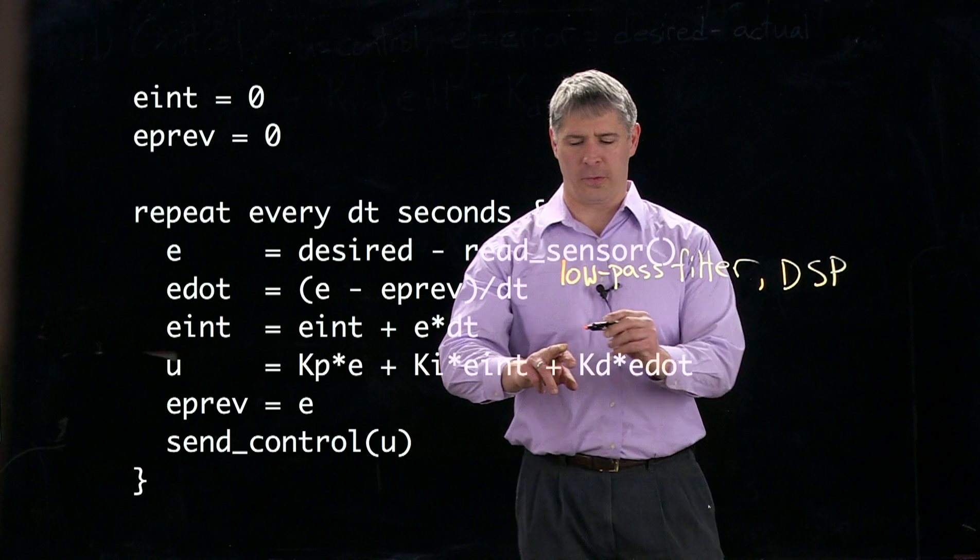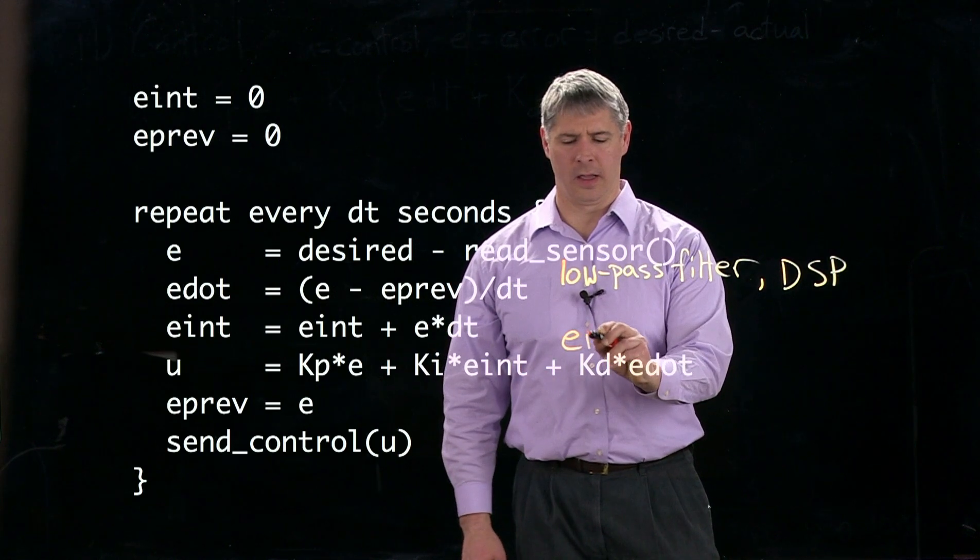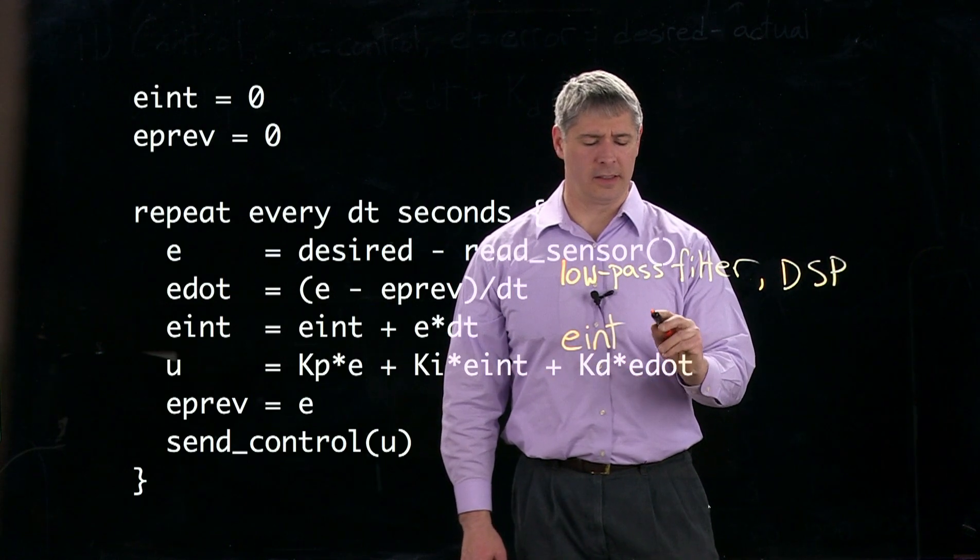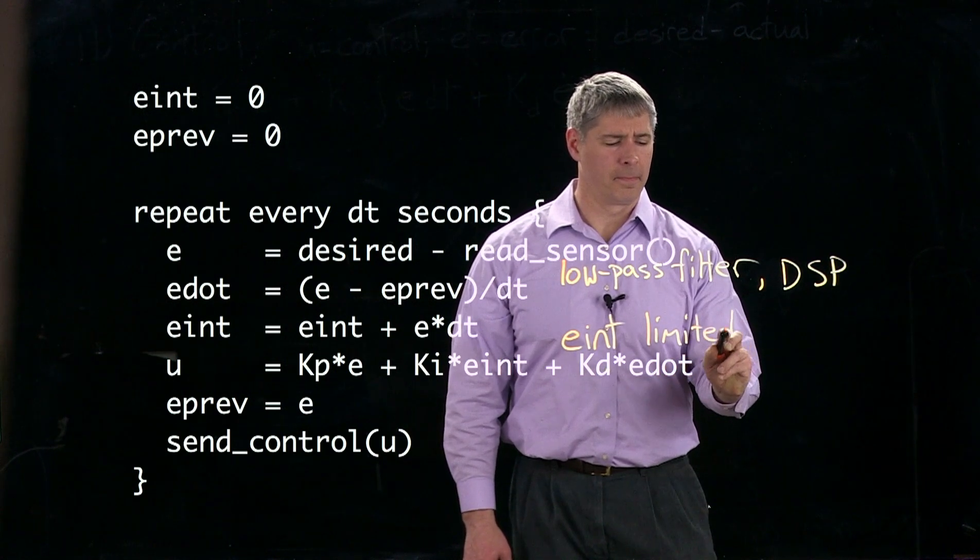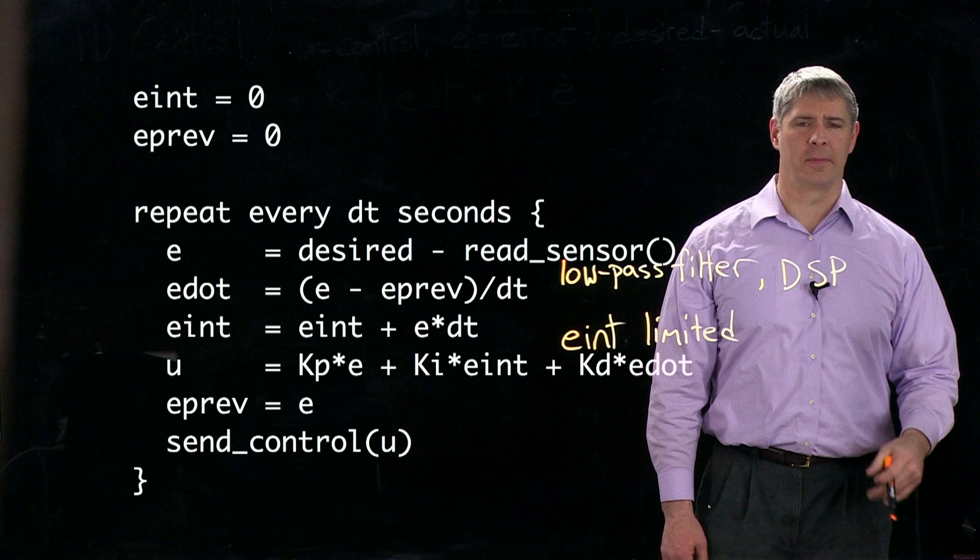So here, if we take the eint and then limit it, then we can get rid of some of that effect.